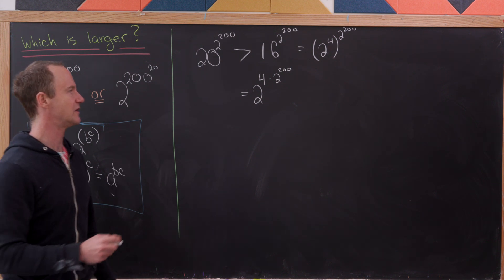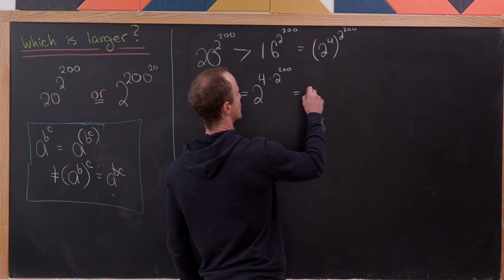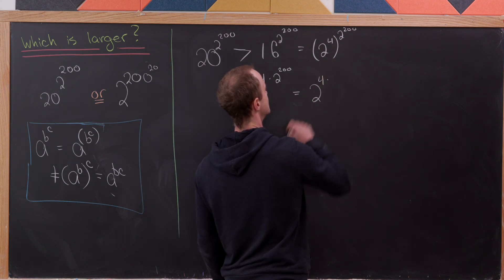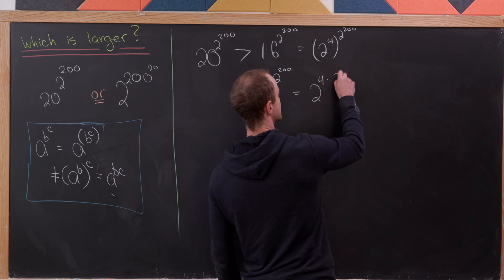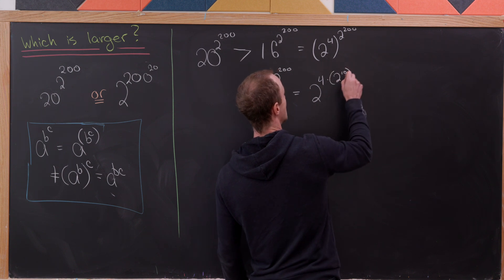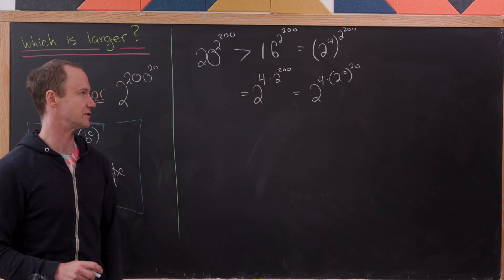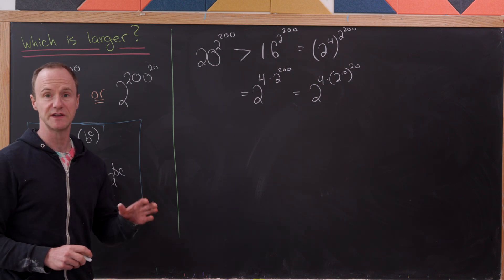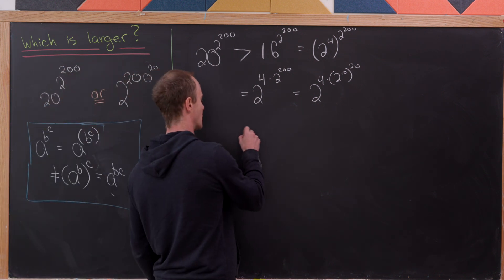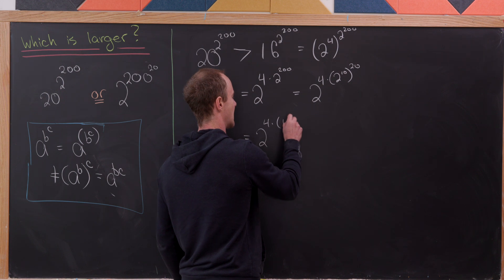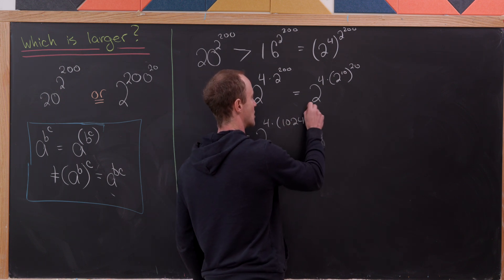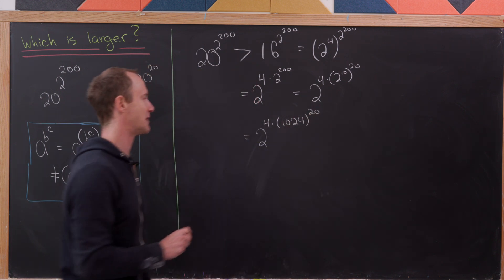Now, how am I going to do that? Well, let's start by writing this as 2 to the 4 times 2 to the 10 raised to the 20 power. I think that'll do it. And then 2 to the 10 is 1,024. So this is going to be equal to 2 to the 4 times 1,024 raised to the 20 power.